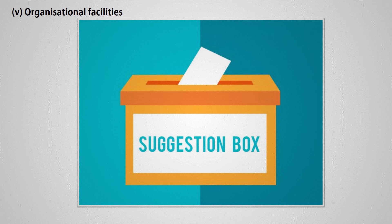The next organizational barrier is organizational facilities. If facilities for smooth, clear, and timely communication are not provided, communication may become poor. Facilities like frequent meetings, suggestion boxes, complaint boxes, social and cultural gatherings, and transparency in operations encourage free flow of communication. Absence of such facilities creates communication problems.